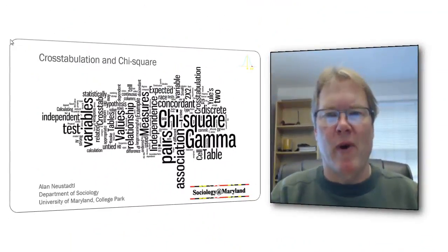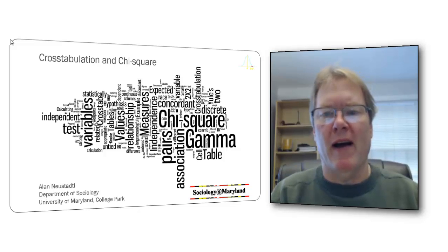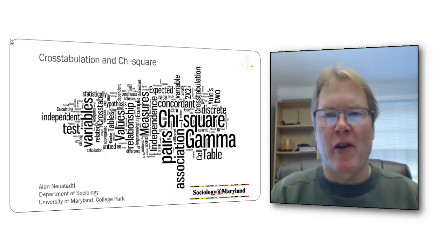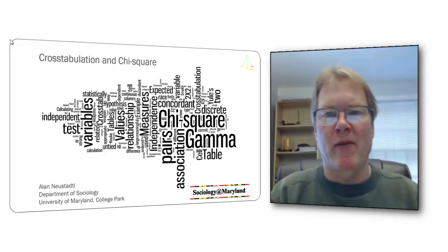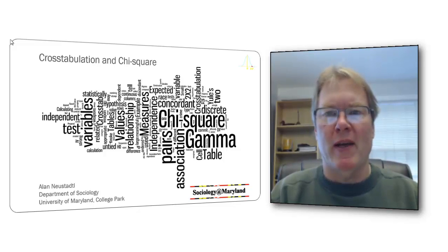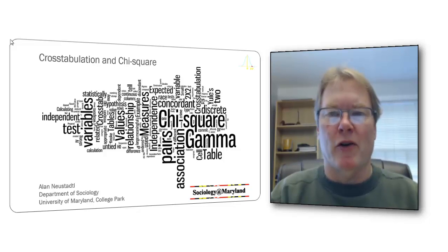In this video, we're going to take chi-square and push a little further on how to understand expected values. I'm going to show you two additional ways of understanding what expected values are. An expected value in the context of chi-square is a cell frequency that we would expect to find if the null hypothesis is true — that our two variables are independent of each other.